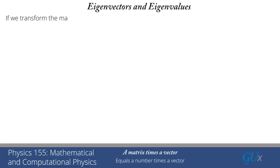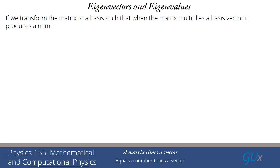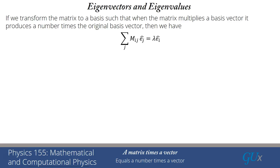Eigenvalues and eigenvectors — what do we mean by that? We're going to transform the matrix to a basis such that when the matrix multiplies a basis vector, it produces a number times the original basis vector. In other words, the sum of matrix M_ij times basis vector Ê_j, summed over j, equals lambda times Ê_i. The fact that lambda doesn't depend on i and multiplies the original vector Ê is what defines an eigenvalue and eigenvector relationship.